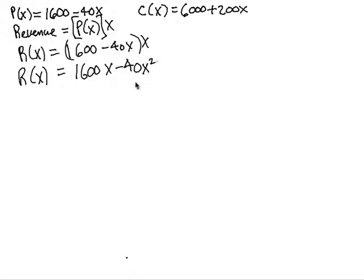Now this is going to make a parabola when we graph it. It might be nice to go ahead and write these terms in order, minus 40x squared plus 1600x.